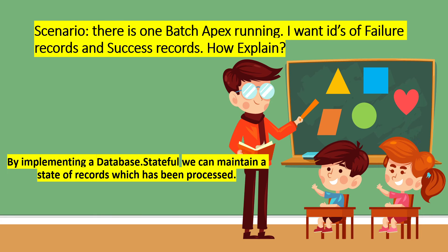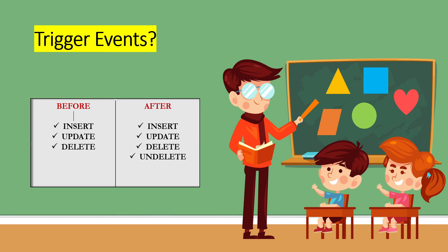There is a batch Apex running and you want the IDs of failed and successful records — how do you do this? Suppose you have a batch Apex and want to track the IDs of records that were processed successfully or that failed. By implementing Database.Stateful, you can maintain a list to track the state of records — which ones were successful and which ones failed.